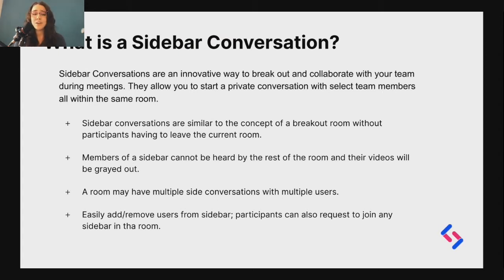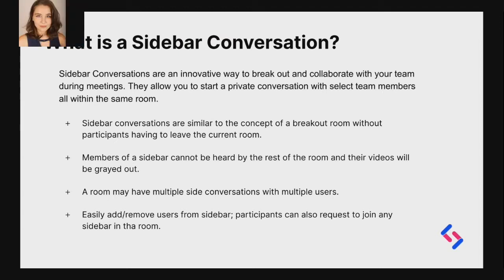A room can also have multiple sidebar conversations open with multiple users — as many as you want — and you can add whoever you want into your sidebar conversations. It's easy to add and remove users, so if you forgot to add somebody who may be relevant to the conversation, it's easy to add them. Participants can also request to join a sidebar if they are not initially in it.